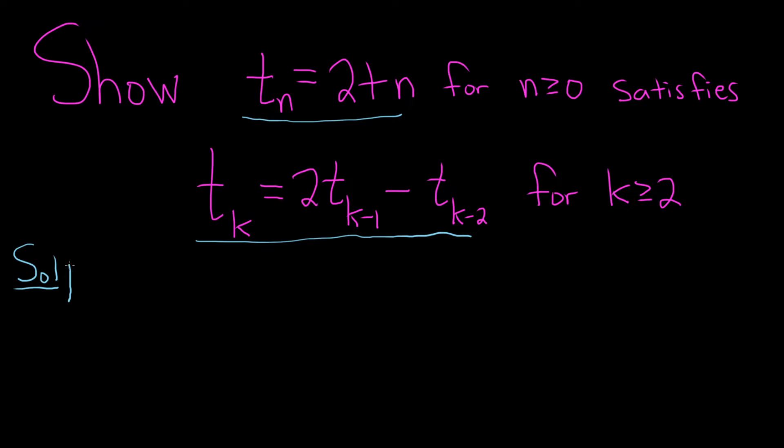So let's do it very carefully. For k greater than or equal to 2, let's start by plugging it into the right-hand side because that's the more complicated side. So we have 2 times t sub k minus 1 minus t sub k minus 2.